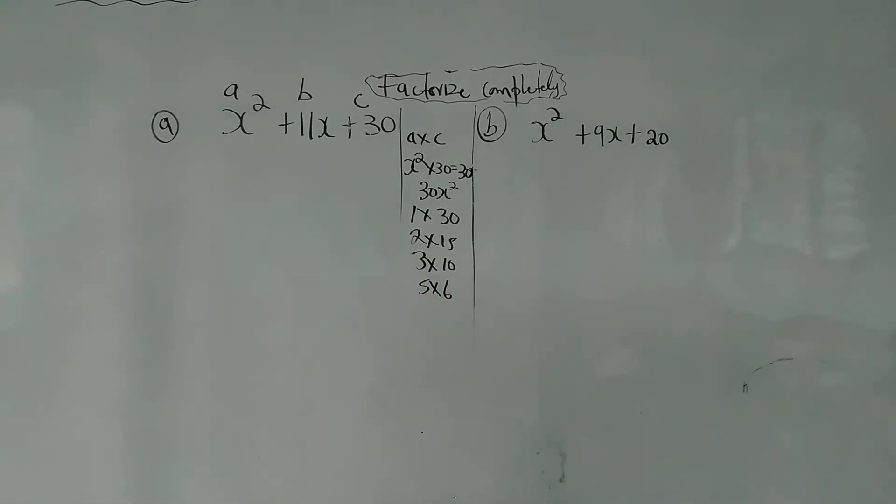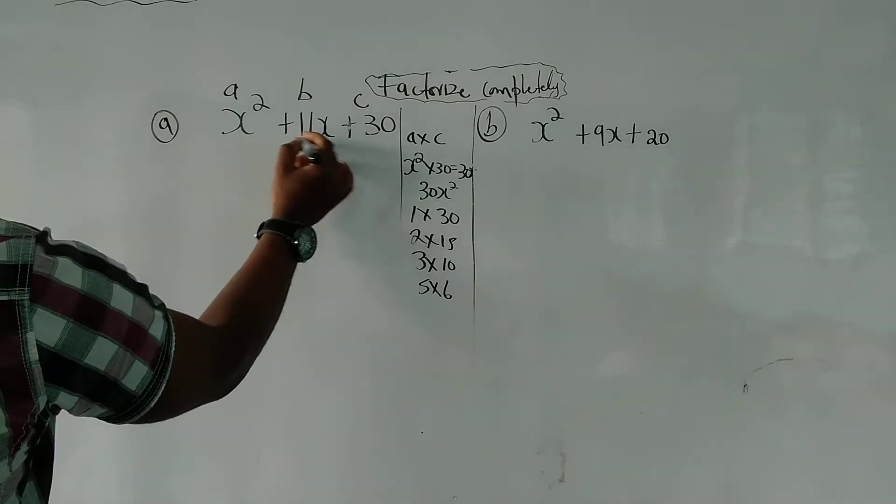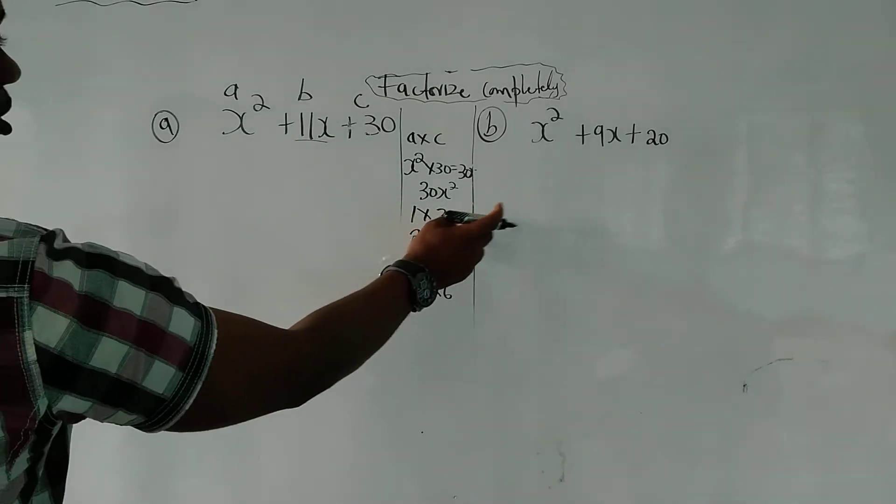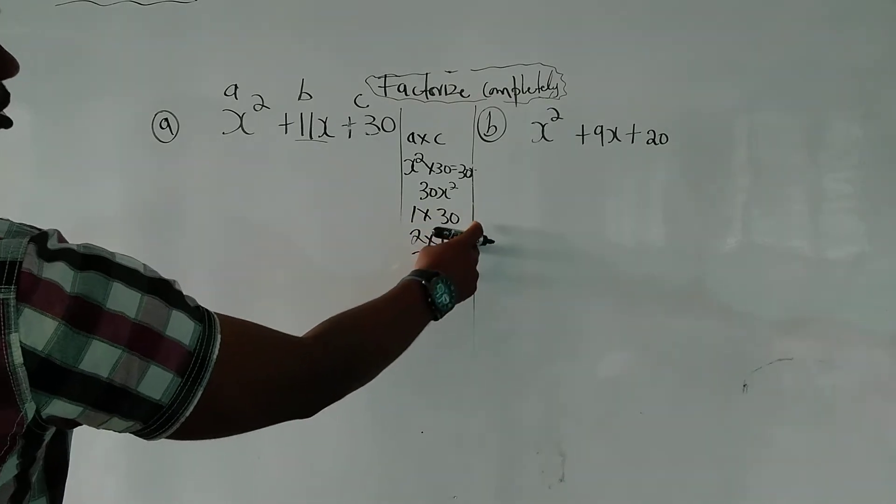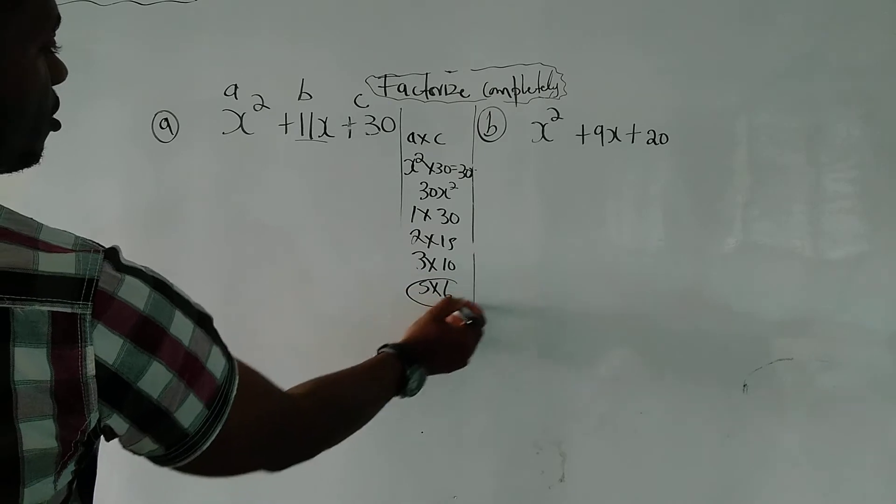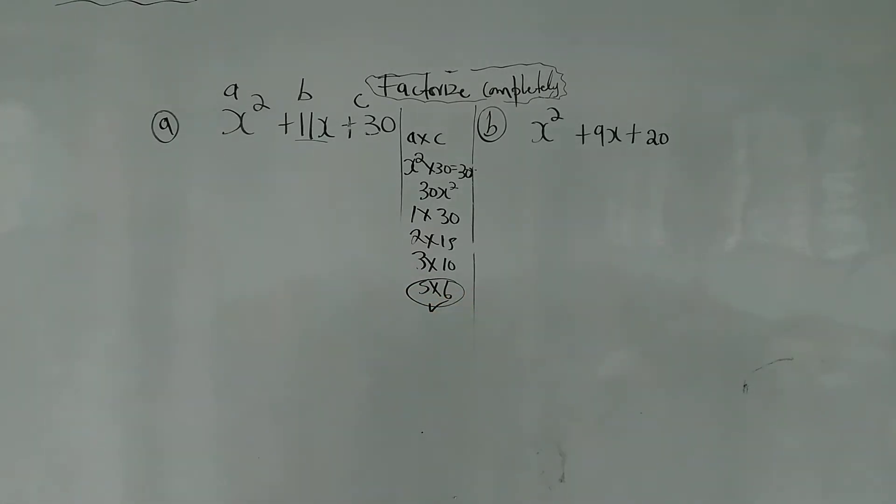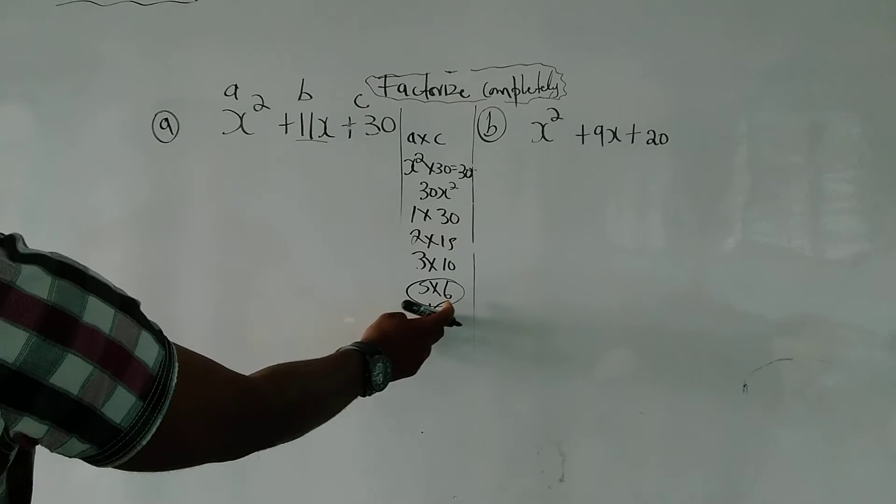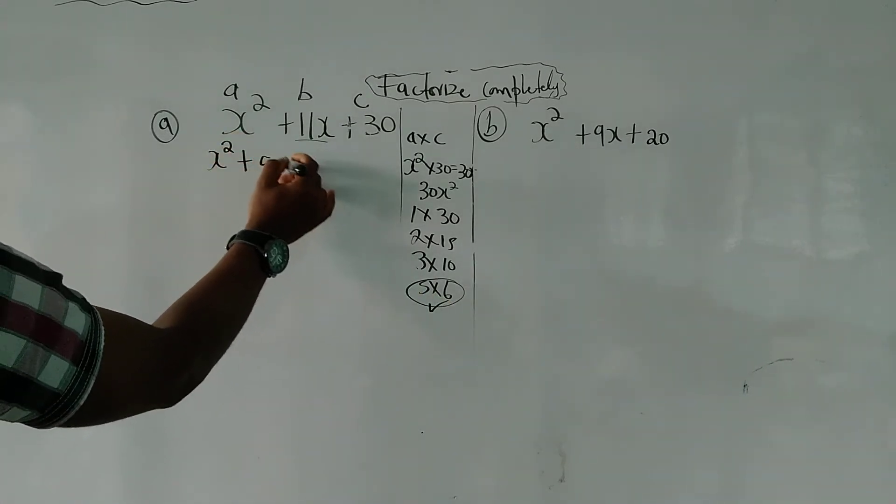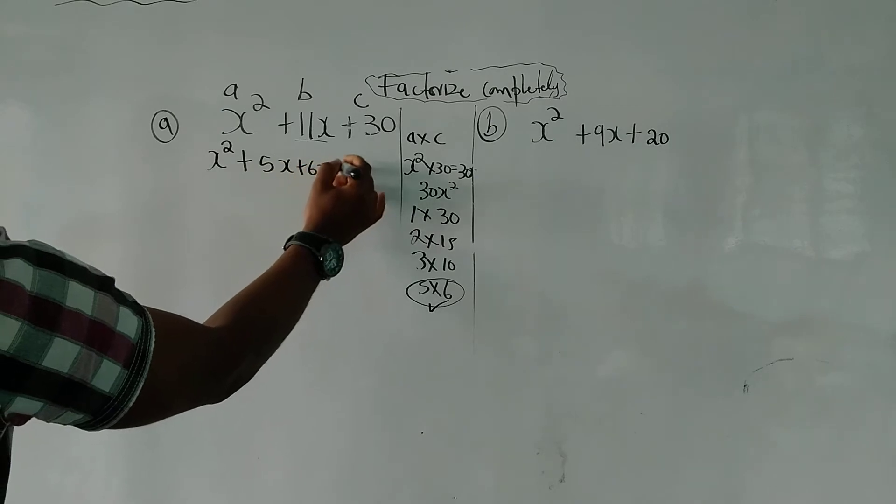From the factors, we are going to examine them and say which one of them can be, which is 11x in this case. 1 plus 30 is 31, 2 plus 15 is 17, 3 plus 10 is 13, 5 and 6 equals 11. Once we identify it, we replace 11x with 5x and 6x. Because it's the same value. 5x plus 6x is equal to 11x.